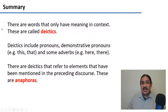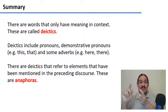In summary, there are words that only have meaning in context, we call them deictics. These include pronouns, demonstrative pronouns like this and that, and some adverbs for space and time, like here and there.